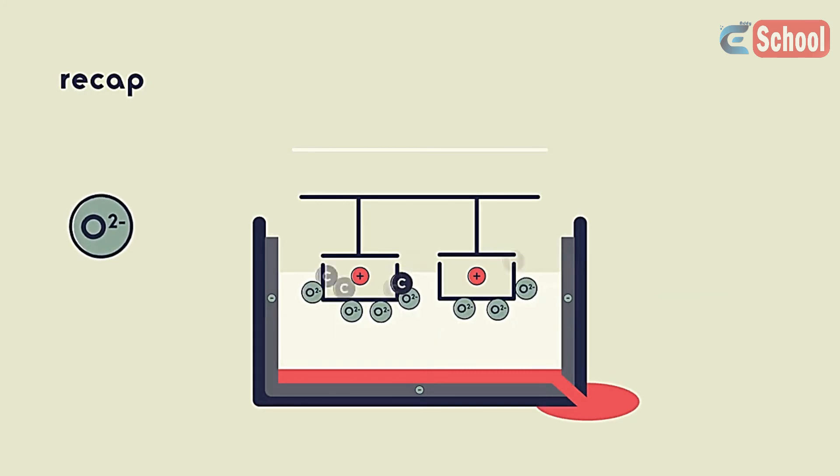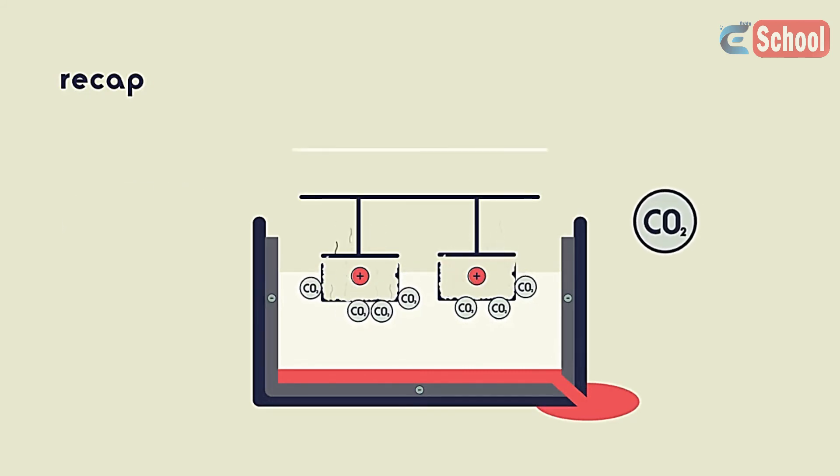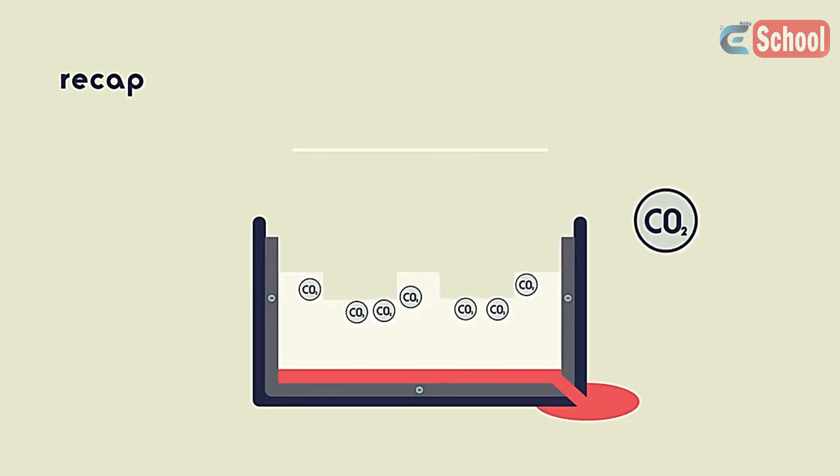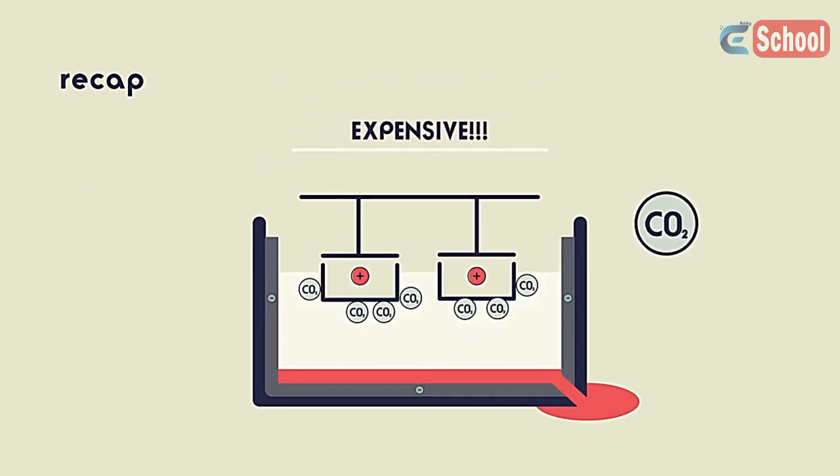The anode is gradually worn away because the oxygen from the solution reacts with the carbon of the graphite anode producing carbon dioxide and so the anode needs to be replaced regularly. Aluminium extraction is very expensive because a lot of electricity is needed.